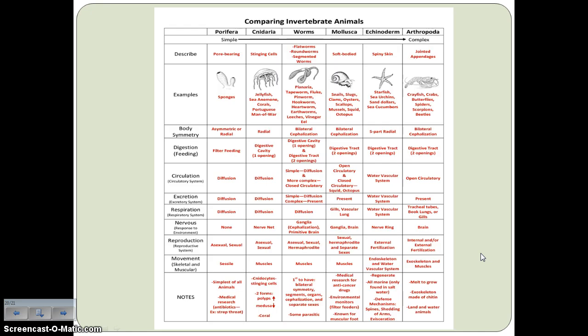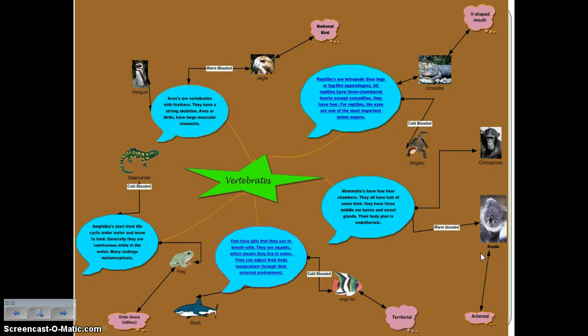Pause on this slide — this is what you're doing your project on: invertebrate animals. Read over this chart because it really gives you an idea of how we went from very simple animals like sponges into more complex invertebrates like echinoderms and arthropods. You can even use this for some of your project information. Then take a look at the graphic organizer on vertebrates — reading about cartilaginous fish, bony fish, amphibians, reptiles, birds, and finally mammals, which is what we are.